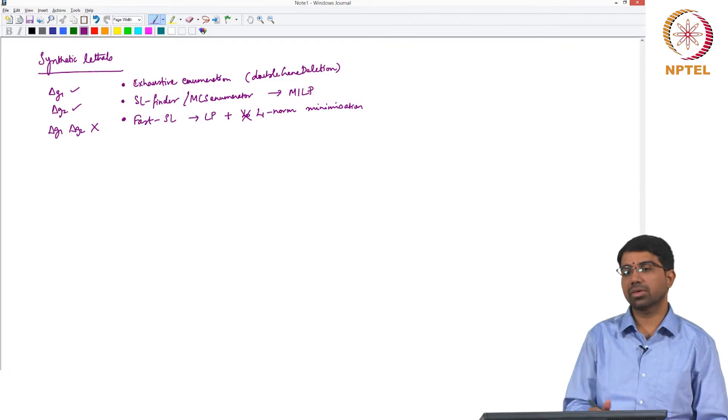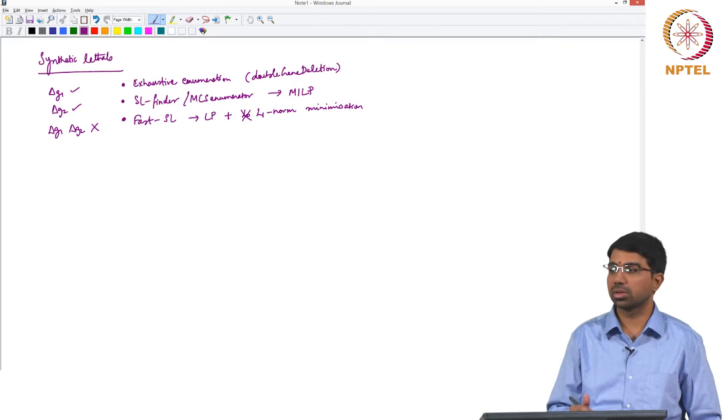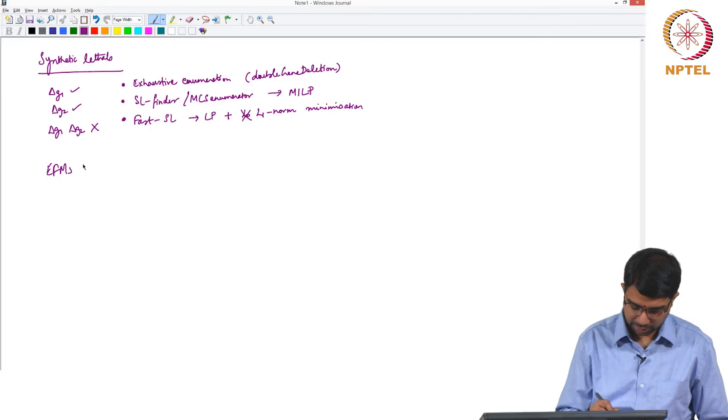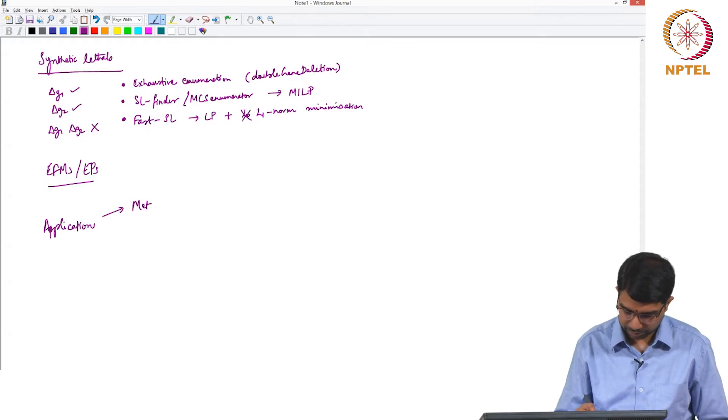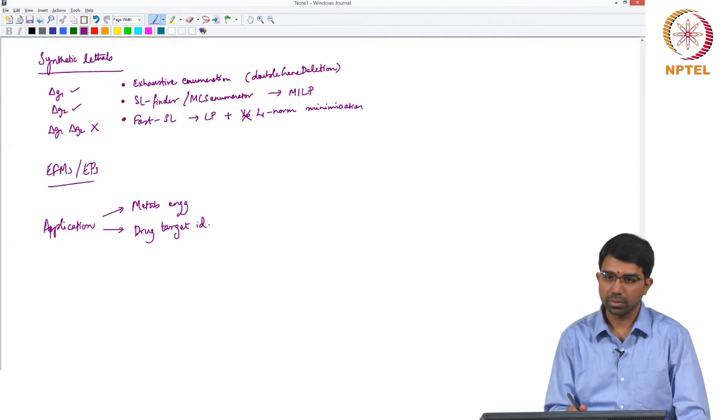The last thing we saw was fast SL which is basically LP plus L0 or actually L1 norm minimisation. You can use L0 but it is slower. So we said that we will any reaction that carries no flux in the beginning is not going to be a lethal reaction. We will eliminate those and so on and so forth. Lastly we saw several applications of flux balance analysis and we also looked at elementary modes. So the other thing to remember is EFMs and EPs and applications mostly are in metabolic engineering, drug target identification.